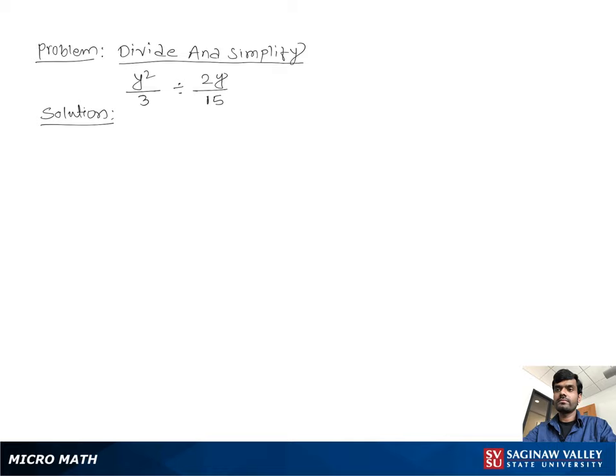Divide and simplify y squared over 3 divided by 2y over 15. Let's write the problem again: y squared over 3 divided by 2y over 15. Now, our second step: we keep the first fraction as it is.